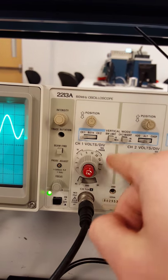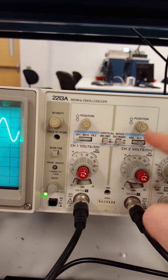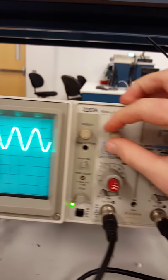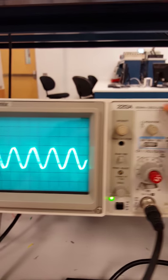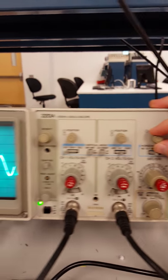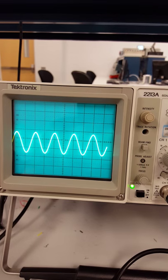Alright, so this side right here is all for channel 1, and this side is for channel 2. So if we want to move it up and down, we'll move this position marker, and we can also use that position marker to move it side to side.